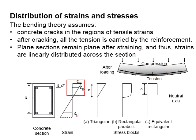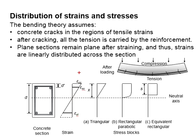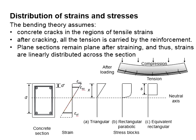The top part undergoes compressive strain while the bottom part undergoes tension strain. This assumption is essential as we are going to need it to determine the regional strain developed within the sections. By assuming the relationship is linear, we may predict the regional strain within the sections through interpolations.